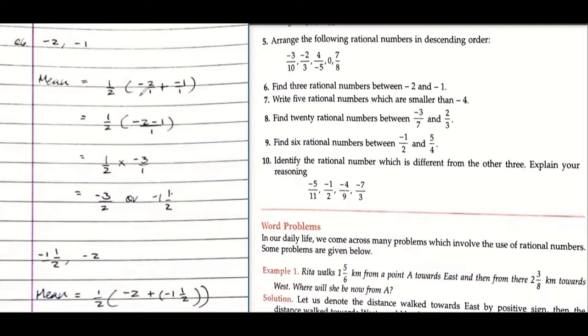Okay, let us start with question number six: find three rational numbers between minus two and minus one. So you have used the mean method, isn't it? Yes, okay. Mean method, so you should write that. Mean method is... can you explain? Find the average, I mean the halfway point.